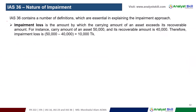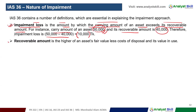Impairment loss is the amount by which the carrying amount of an asset exceeds its recoverable amount. For example, if the carrying amount is $40,000, the impairment loss is the excess of that carrying amount over the recoverable amount.